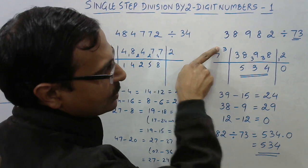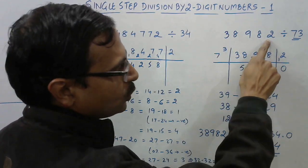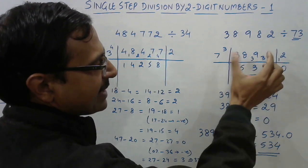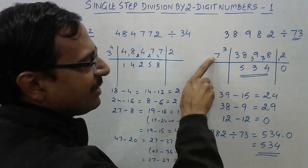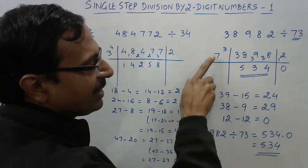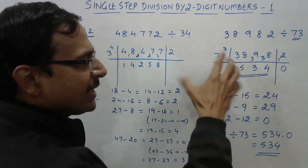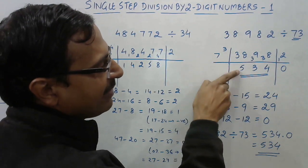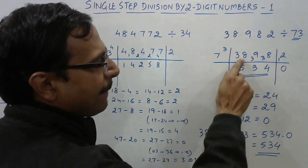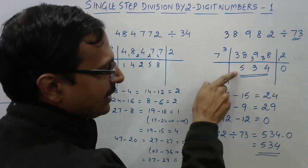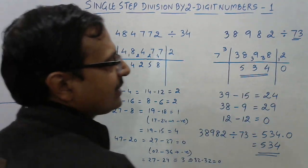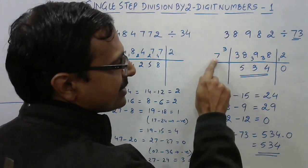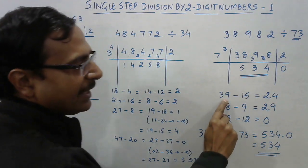Since we have separated out one digit of the divisor, from the right-hand side we also separate out one digit of the dividend. So this 2 is separated out, and the remaining four digits 3898 are written here as the dividend. Seven does not divide 3 since 3 is less than 7, so I take two digits first — that is traditional division. Seven times 5 gives us 35, which is close to 38. So 38 minus 35 gives 3, and that 3 makes it 39 in the next step.